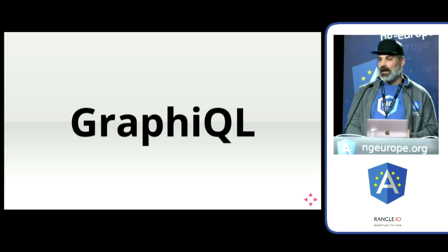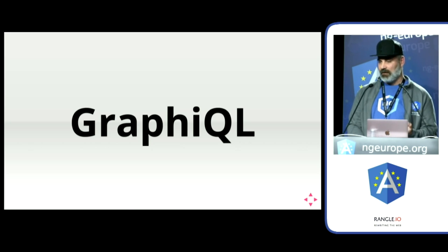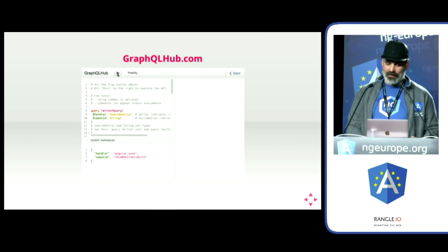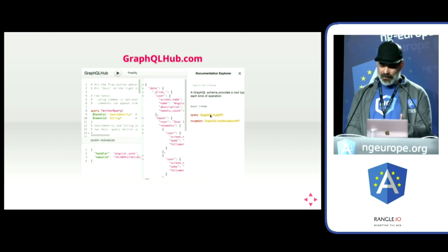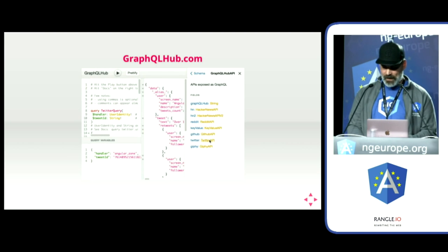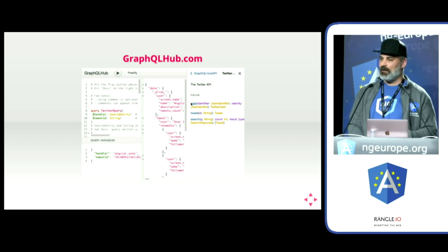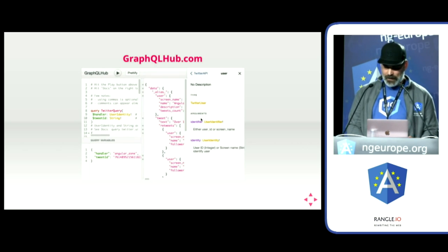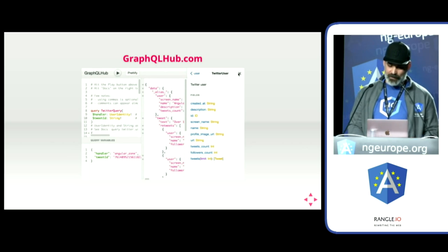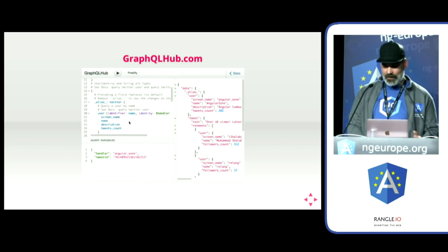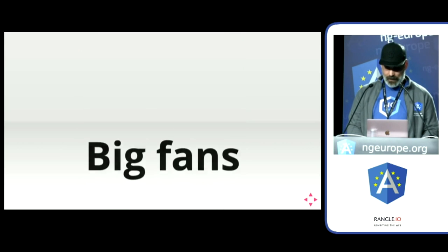I'd like to encourage using the default tool for GraphQL, which is GraphiQL. There's also a nice website called GraphQL Hub, which gives you access to Twitter and GitHub public APIs. You can just query and explore it, as you can see in this animation. For example, if you want to get Twitter followers, you can just explore the GraphQL API, browse the available fields, find the properties you want to query, go back to the query, add them, and get the results.